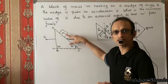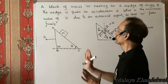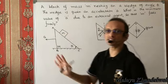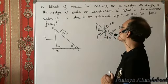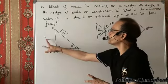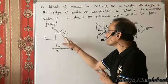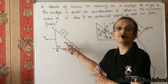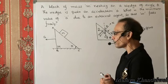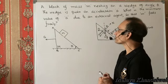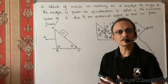We have a block of mass m resting on a smooth inclined plane, and the inclined plane is given an acceleration a. The problem asks us to find the minimum value of a such that m falls vertically downwards.